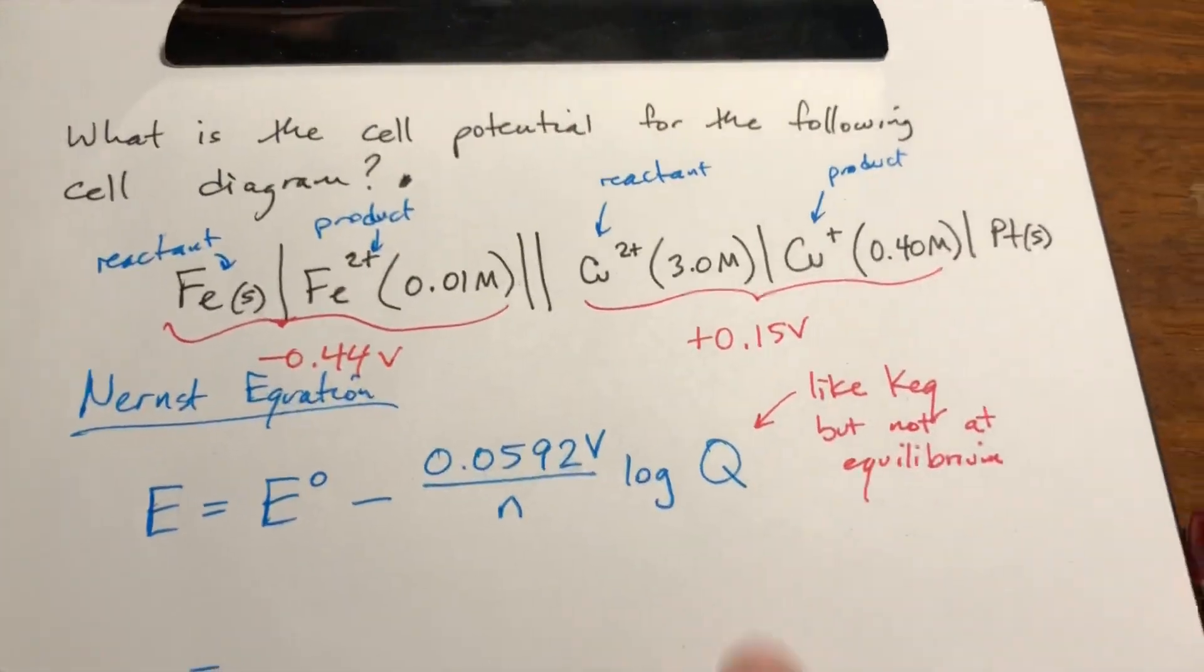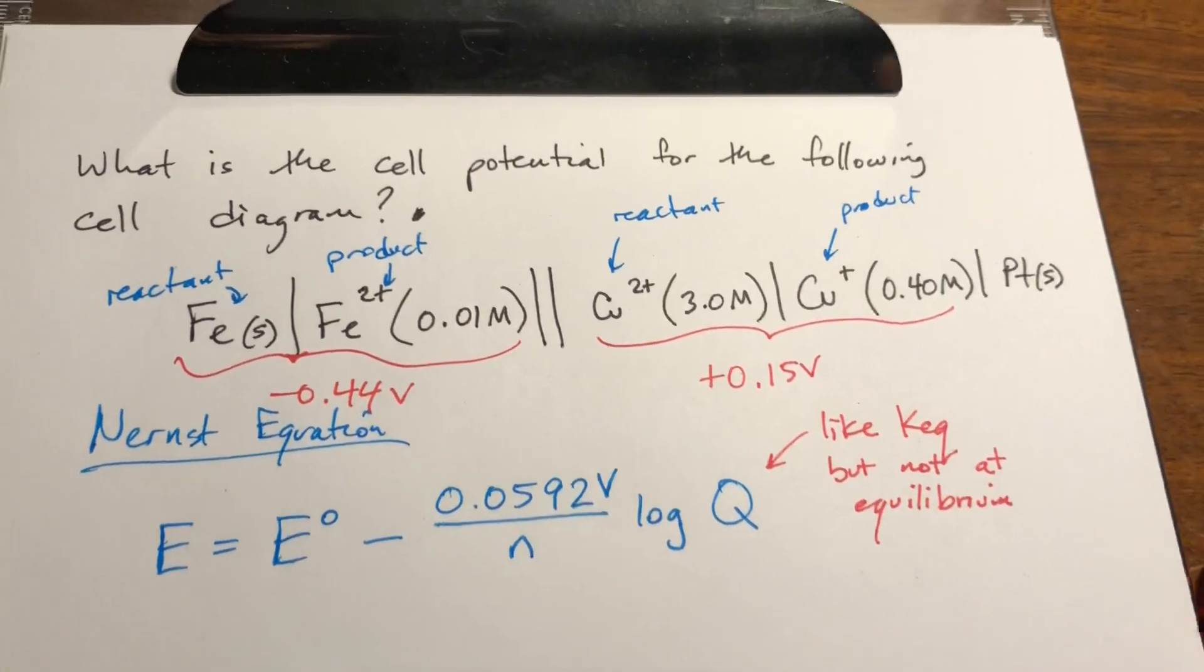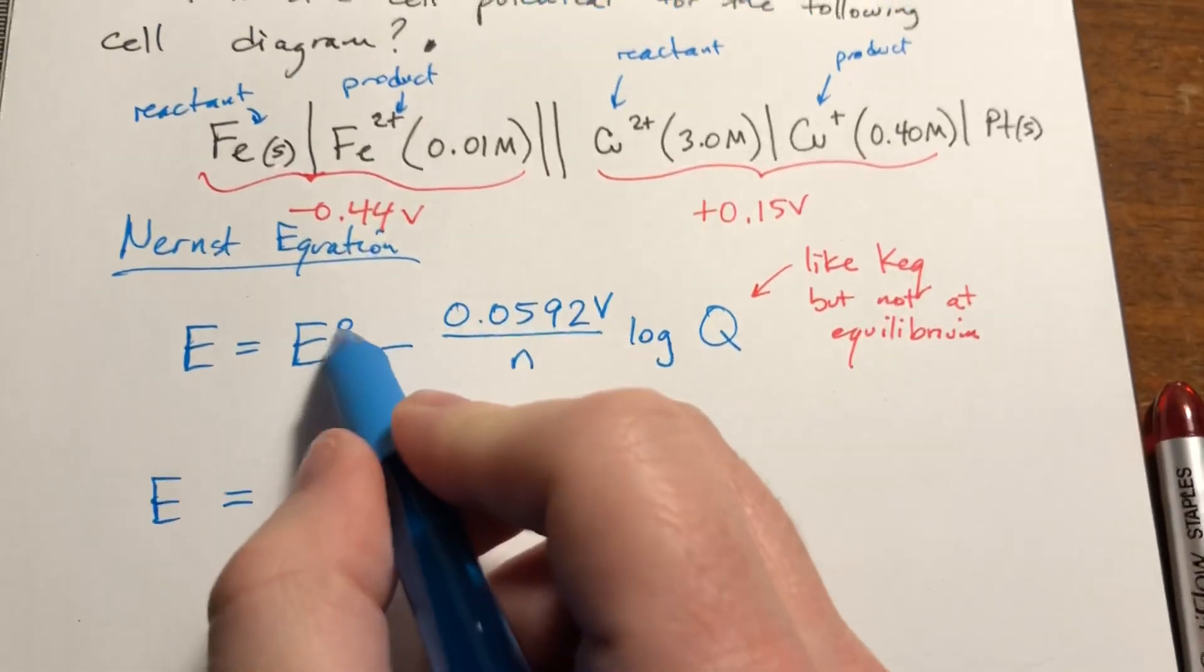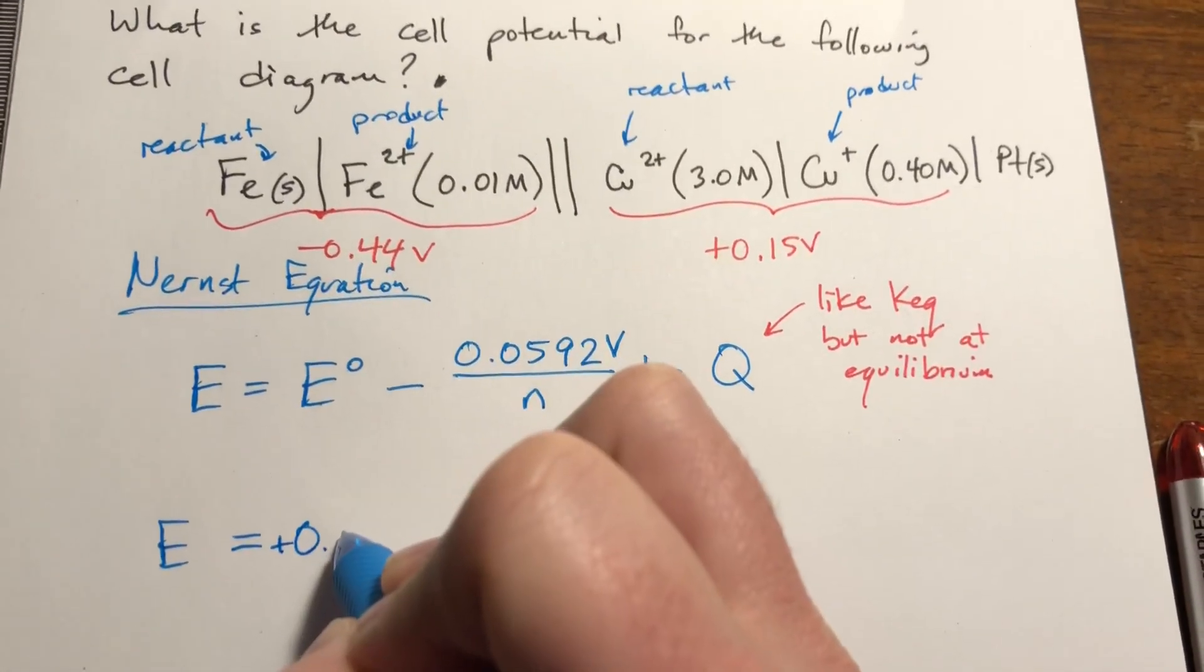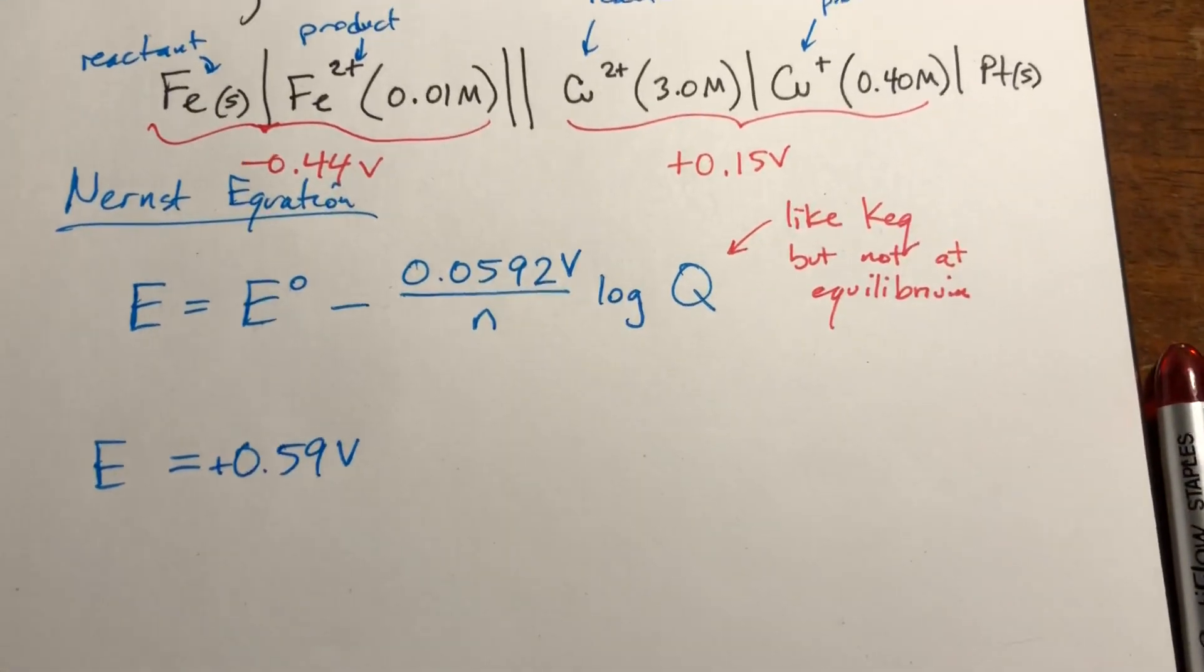So at standard conditions we would take this minus this and it comes out to be, that's what we're solving for is E. E at standard conditions would be positive 0.59 volts, okay?